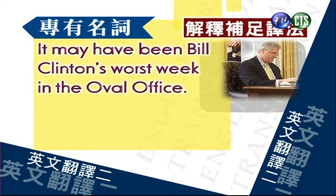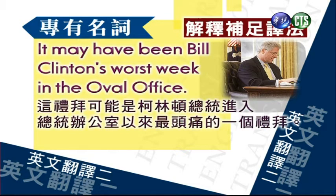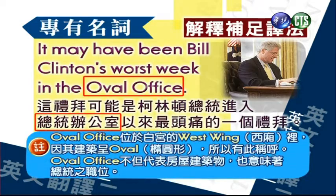It may have been Bill Clinton's worst week in the Oval Office. 这礼拜可能是柯林顿总统进入总统办公室以来最头痛的一个礼拜。我们做个注释：Oval Office位于白宫的West Wing西翼里面。因为它建筑成Oval就是椭圆形，所以由此称呼。Oval Office不但代表房屋的建筑物，也意味着总统的职位。